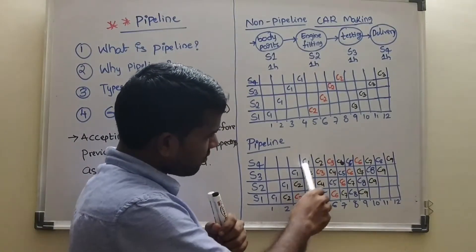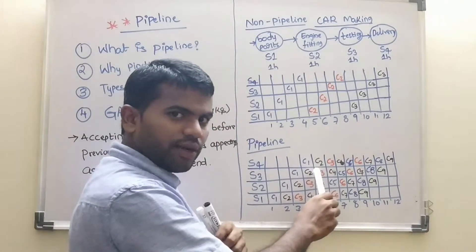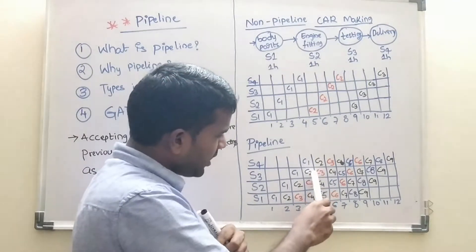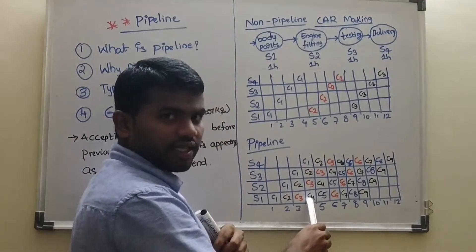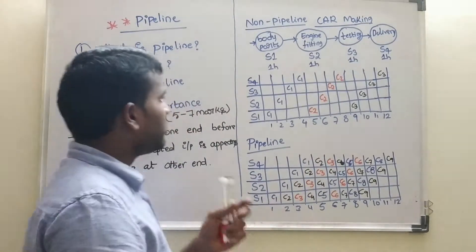It has taken 4 stages. Before C1 completed the entire execution in pipeline in this one, it has taken already 3 stages, the 3 inputs. 1, 2, 3. So this is the pipeline.